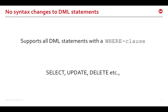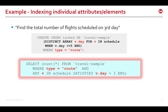All DML statements with the WHERE clause, such as SELECT, UPDATE, etc., can use the array indexes. For example, this SELECT statement finds the total number of flights scheduled on the third day of the week. It iterates using the ANY operator to find matching index keys. Note that the DML statement uses the exact array variables and predicates highlighted in red color, which are used in the CREATE INDEX statement.